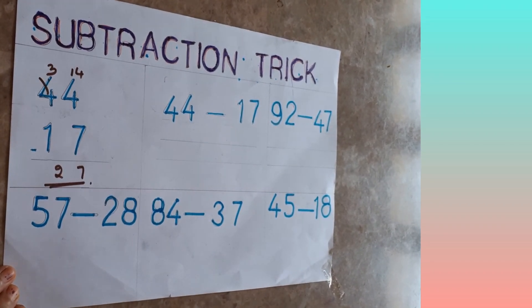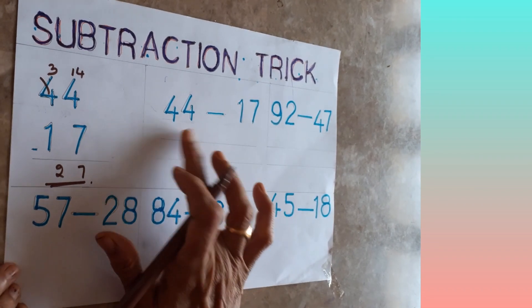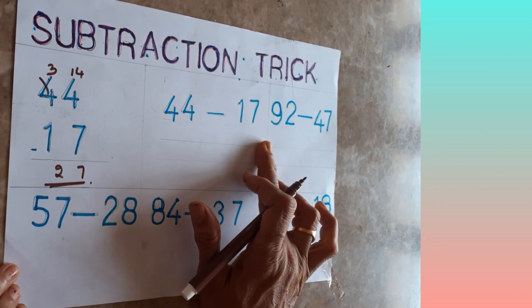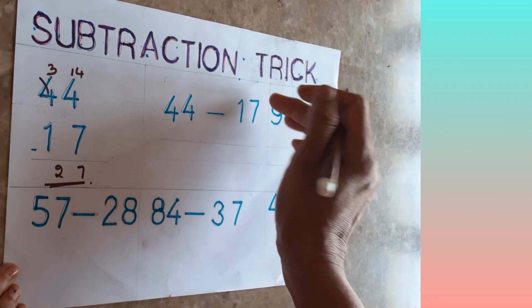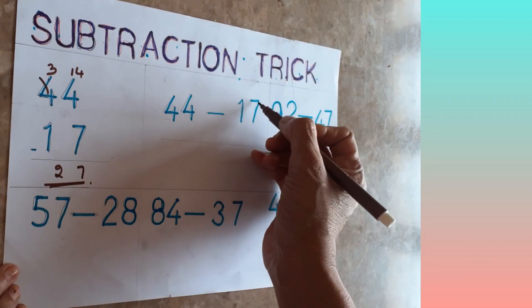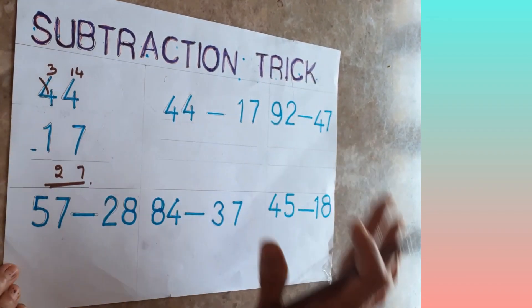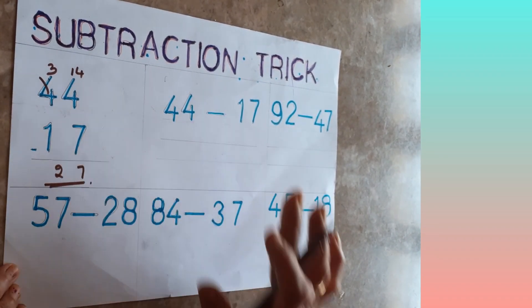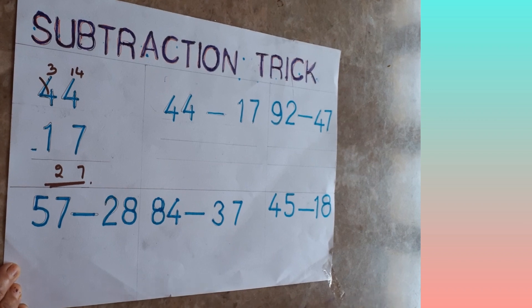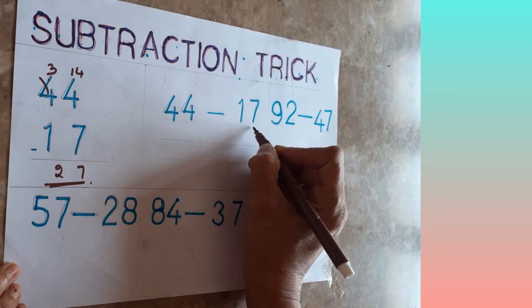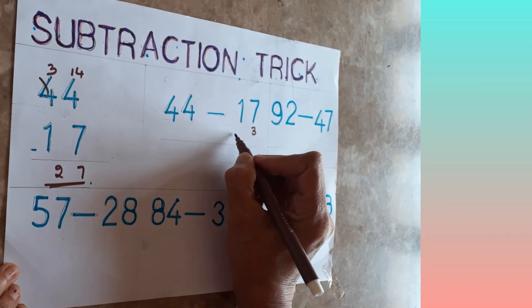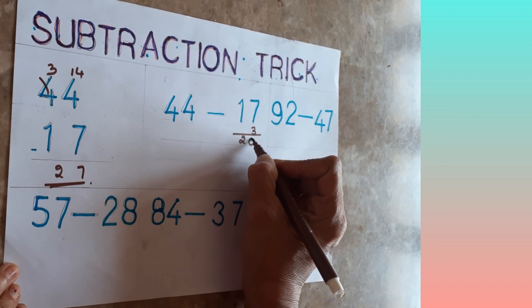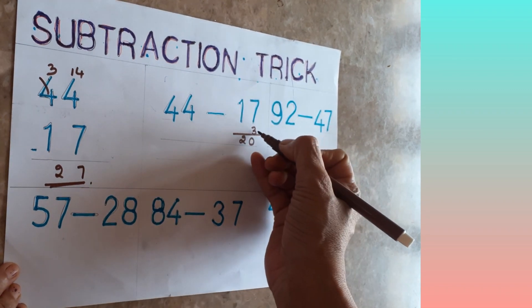Not this one. I will tell you simple trick. What you have to do? Same sum, 44 minus 17. You have to take the nearest 10 round figure number. This one, 7, nearest 10. How much if you add you will get 10? 3. If you add it will become round figure. See, 17 plus 3, it will become 20. Same number whatever you are adding here, same number you add here also in units place.